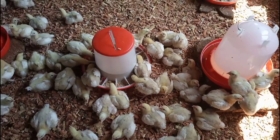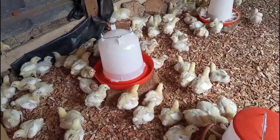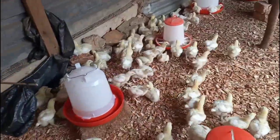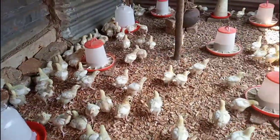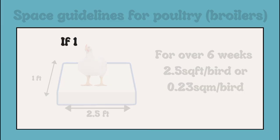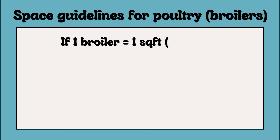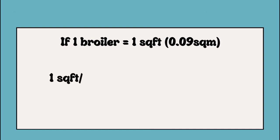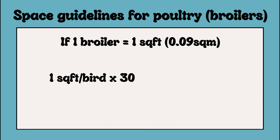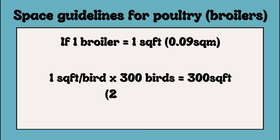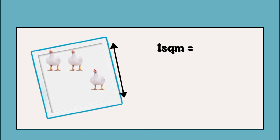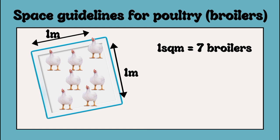Let me show you a simple way of determining how much space you will need for a particular number of birds. For example, if you plan on getting 300 broiler birds, the house space is estimated as follows: if one broiler chicken occupies one square foot (0.09 square meters), then for 300 broilers it would be 1 square foot × 300 birds = 300 square feet, or 27.87 square meters. Using this same method, you can find out how much space you need for any number of broilers. About seven broilers can fit in one square meter.